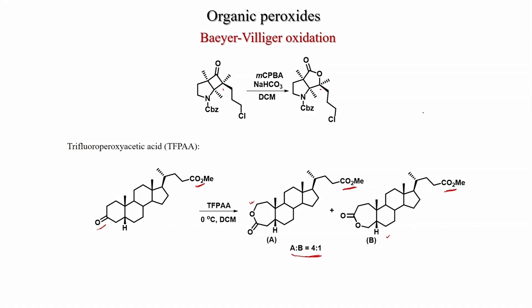An important point: if you have a compound with both a double bond and a carbonyl group and treat it with MCPBA, the epoxide will form first. Olefin epoxidation with MCPBA is much faster than carbonyl-to-ester (Baeyer-Villiger) conversion. So if you use one equivalent of MCPBA, you can selectively get the epoxide.